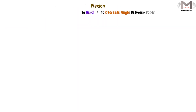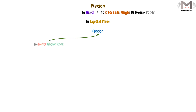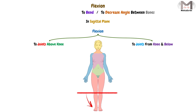The term flexion means to bend, or to decrease the angle between bones in the sagittal plane. We will divide this movement according to the location: joints that are above the knee, and joints that are from the knee and below.